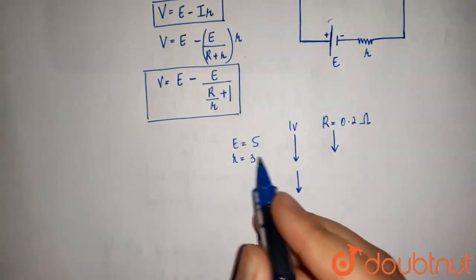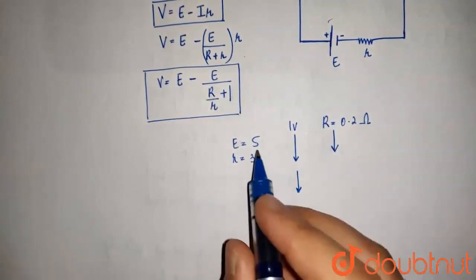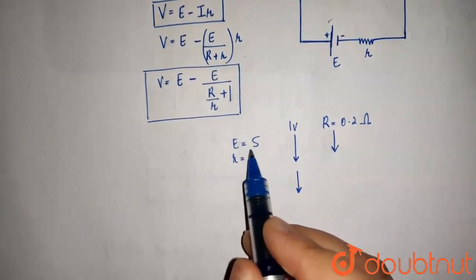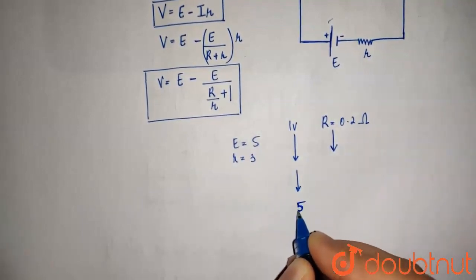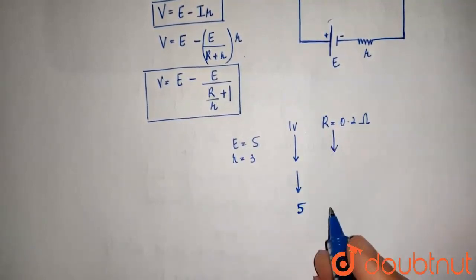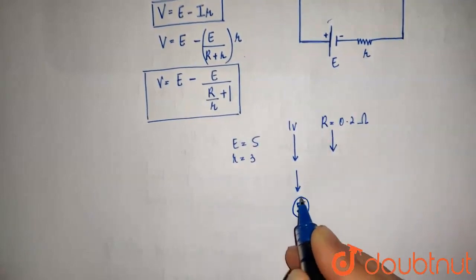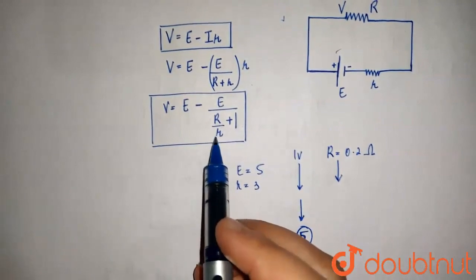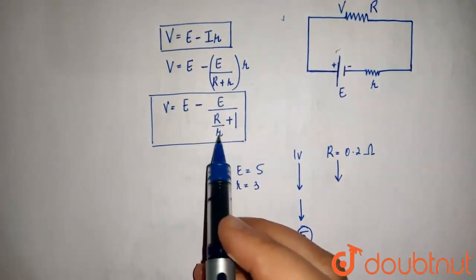And then, this V would stop where its potential difference becomes equal to the actual EMF, that is 5. When this becomes 5, no matter how much we increase this, this will be only 5.